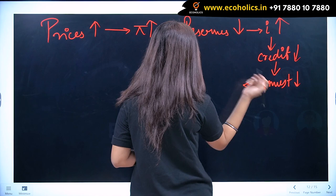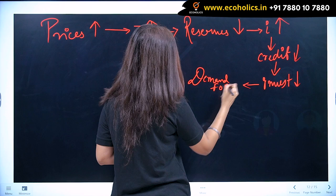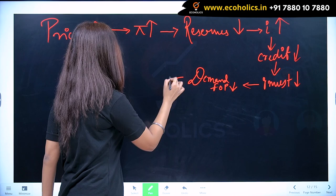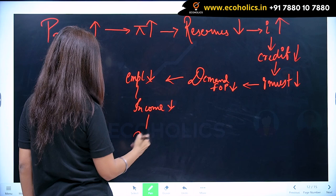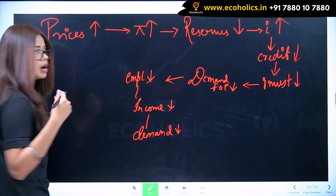If the investment was lower, then the demand for the factor of production was lower. Demand for the factor of production was lower. Employment was lower. Income was lower. After that, demand in the economy was lower. If the demand was lower, then you have to follow the downward arrow.